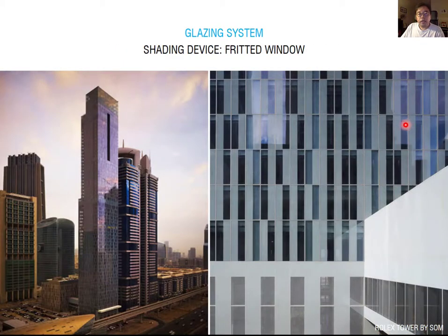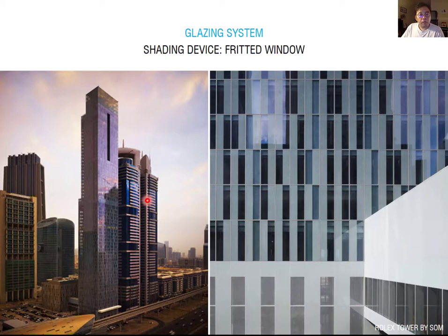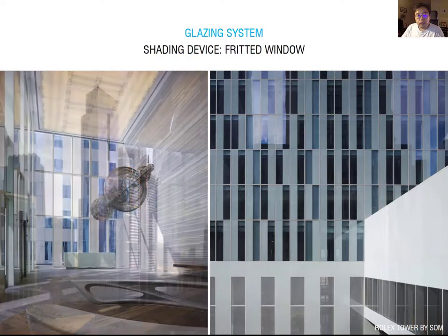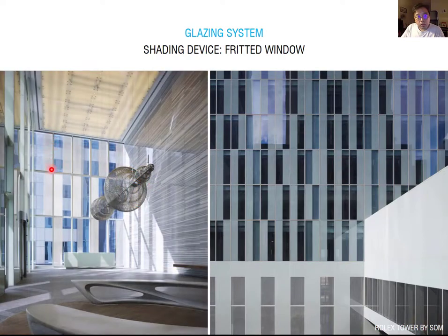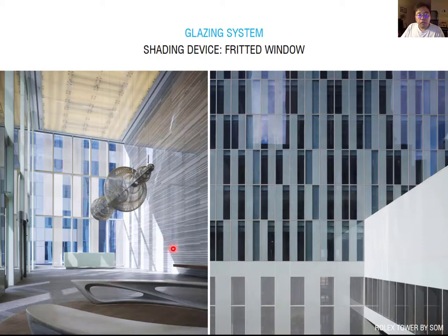The next shading device is fritted glass. This project is the Rolex Tower in Dubai, designed by SOM. The building is built with a high-performance curtain wall using fritted glass. The glass cladding consists of a ceramic frit pattern for shading purposes. You can see this translucent quality — it is all used as a shading device made by printed glass. It's not an actual solid color; they use a circular pattern over the surface. It protects radiant heat very well from outside, but from the inside, you still get diffuse lighting.